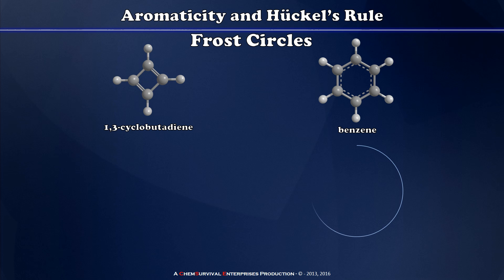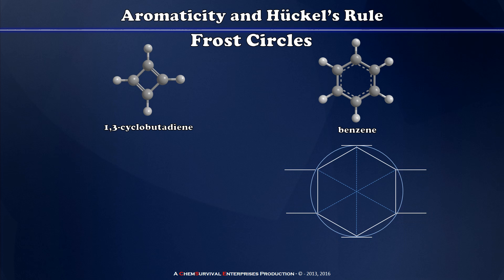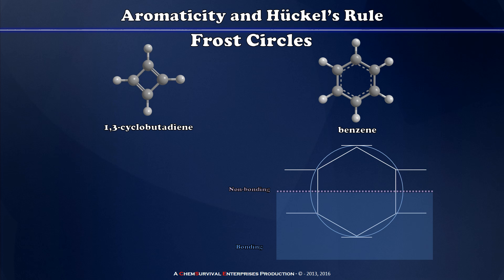Let's start with benzene. To produce the Frost circle, I first draw a circle, then inscribe inside it a polygon with a number of sides equal to that of the ring — six atoms means a six-sided polygon — always inscribed point down. The corners of the polygon represent the energies of the molecular orbitals in the pi system. A horizontal line bisecting the circle gives the non-bonding energy. Orbitals below this line are bonding molecular orbitals, orbitals above are antibonding, and orbitals directly on the line are non-bonding.